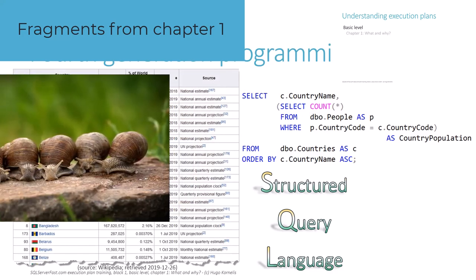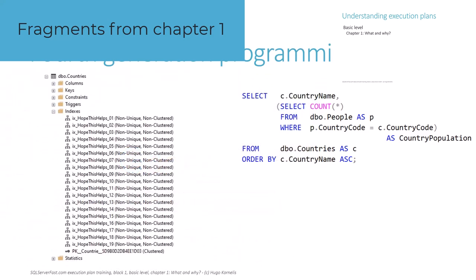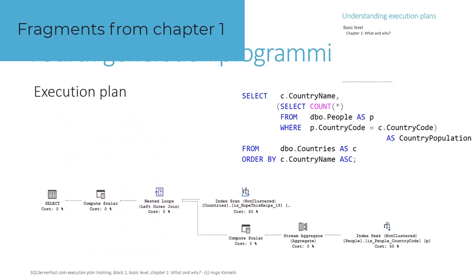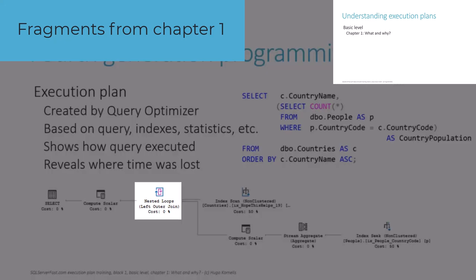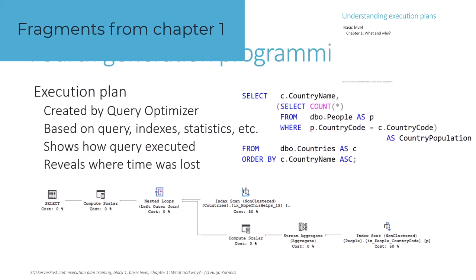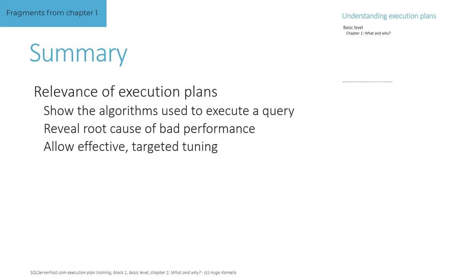The first chapter explains the basics of what execution plans are and why they are relevant when you try to troubleshoot a slow-running query. Instead of throwing stuff at the wall and seeing what sticks, execution plans allow you to pinpoint the exact cause of bad performance, which means you can target specifically that root cause.